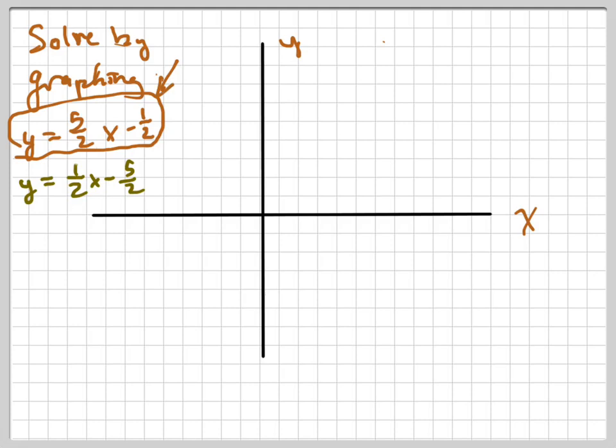I'm going to solve this by first graphing my y-intercept, which is negative 1 half. That's my y-intercept, negative 1 half. So that's right about there. And then I'm going to use the slope, rise over run. The rise is 5, and the run is 2.